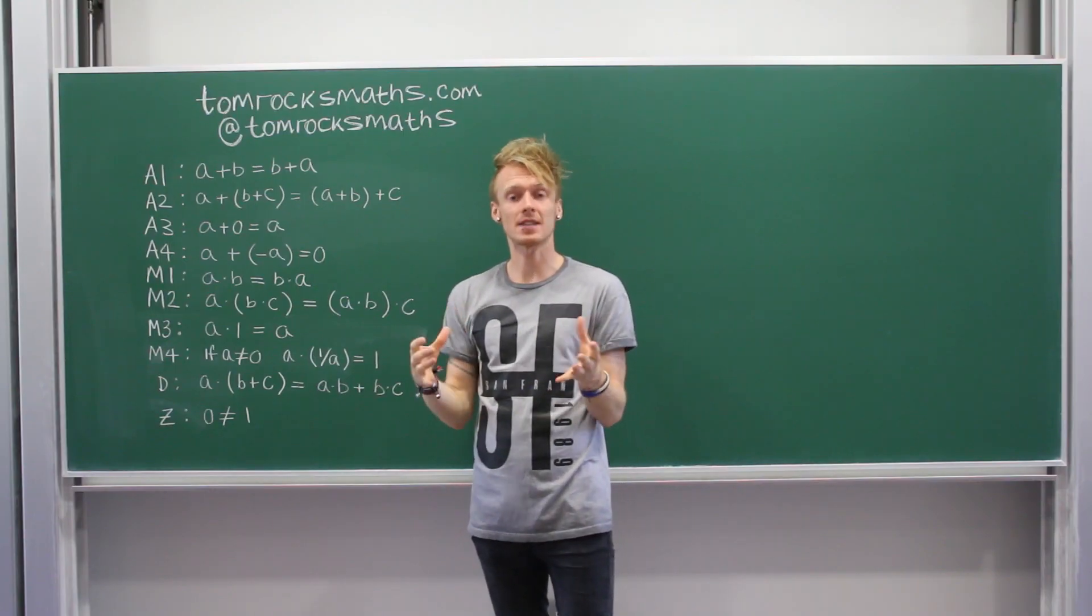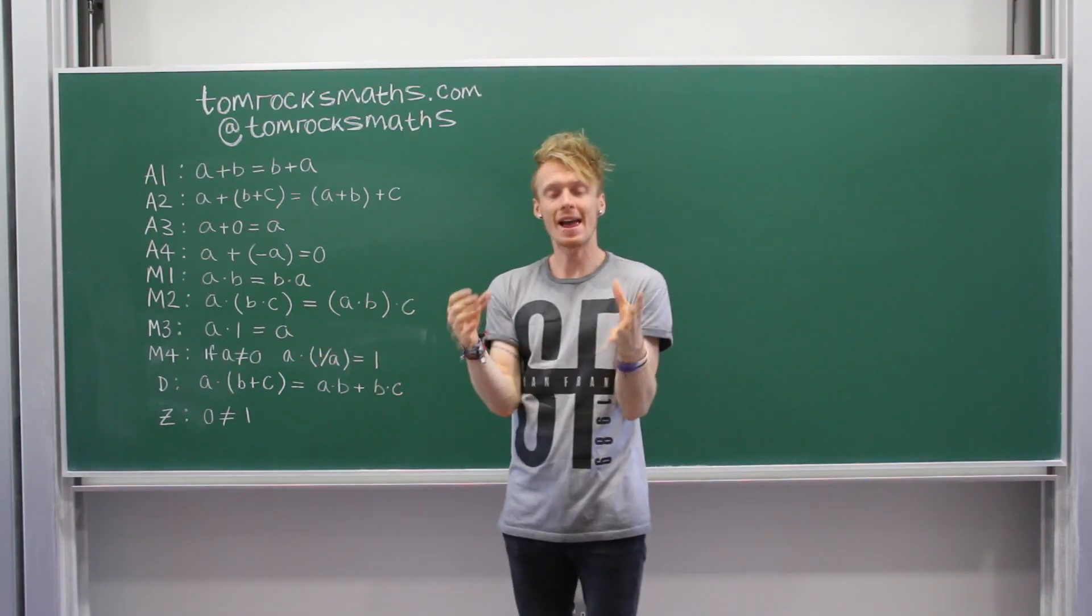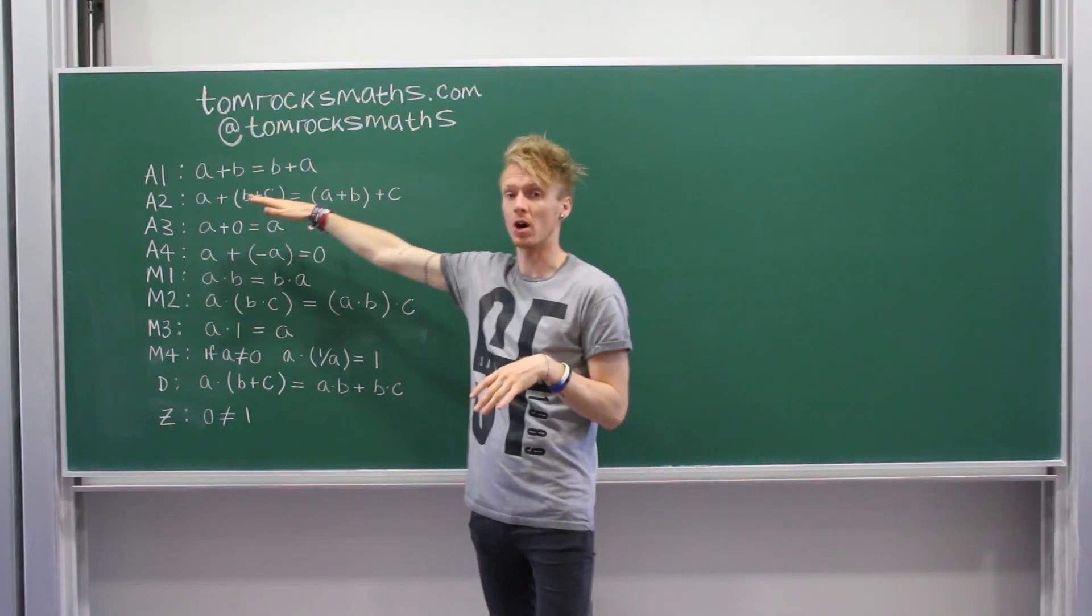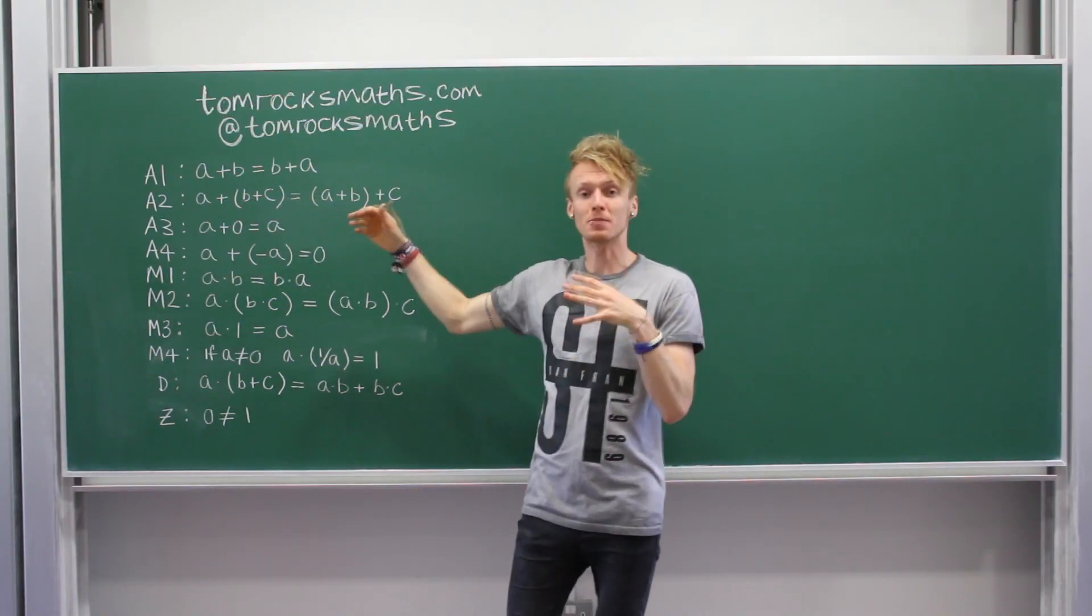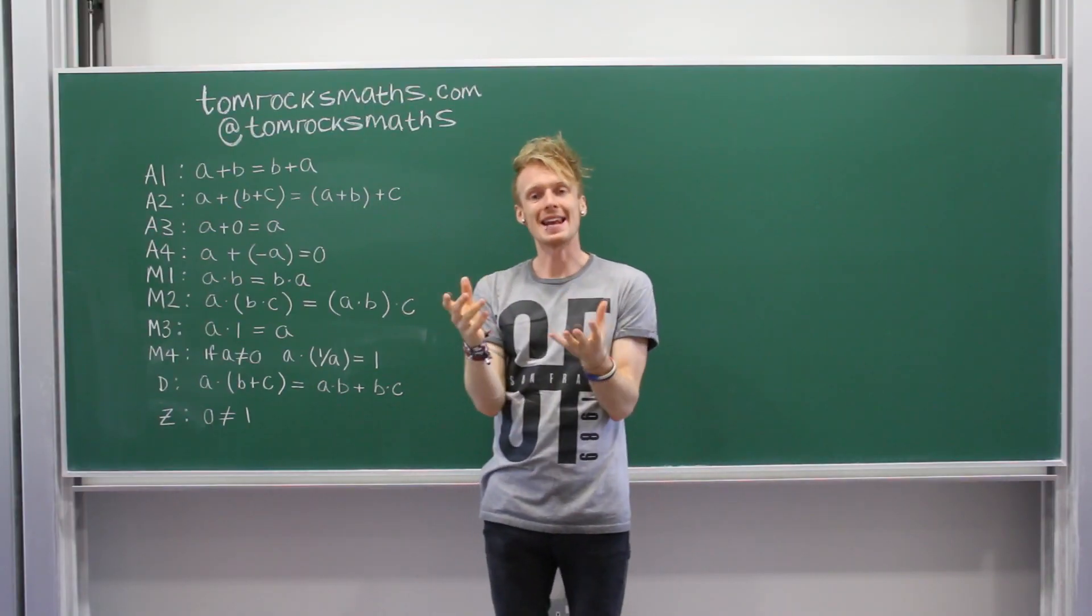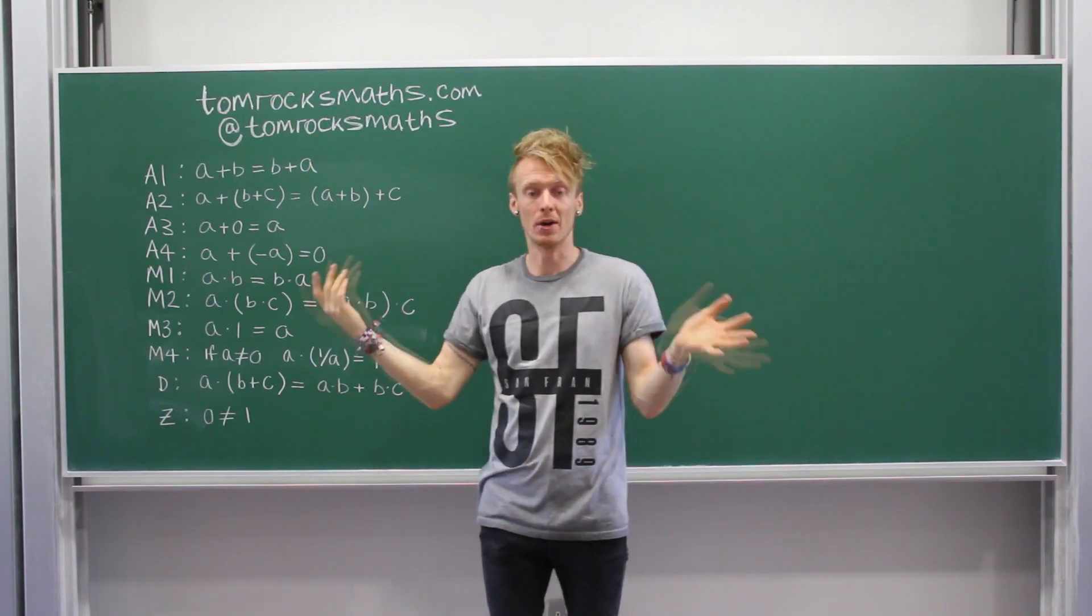So I've written all 10 axioms on the board. And if we start with the first group of 4, A1 to A4 for addition. So for the first one, we have a plus b equals b plus a. So this is telling you you can add numbers in any order. 2 plus 3 is equal to 3 plus 2. They're both 5.